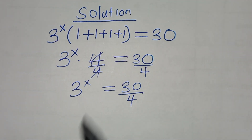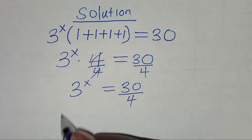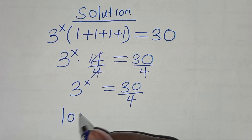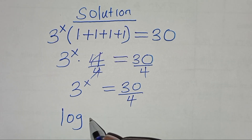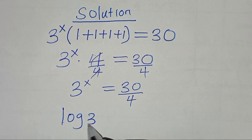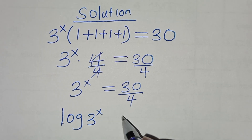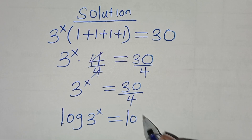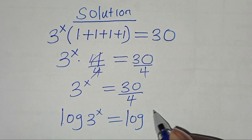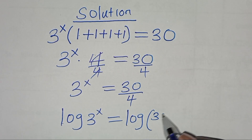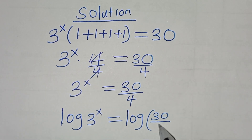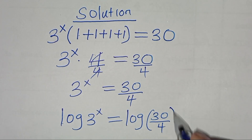To solve for x, we introduce logarithm on both sides, so that we have log 3 to the power x is equal to log(30 over 4).